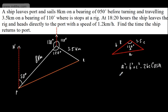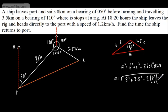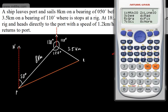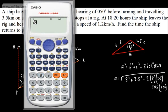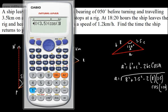You'll be given this in the formula book. So we can say that A equals the square root of B squared — which is 8 squared — plus C squared — which is 3.5 squared — minus 2 lots of B which is 8, multiplied by C which is 3.5, multiplied by the cosine of 120 degrees. Make sure you're in degrees mode — shift mode 3 on here will get you in degrees. So what we want then is the square root of 8 squared plus 3.5 squared, minus 2 times 8 times 3.5 times cosine of 120 degrees, then close this off.